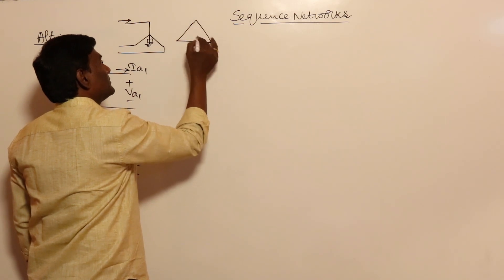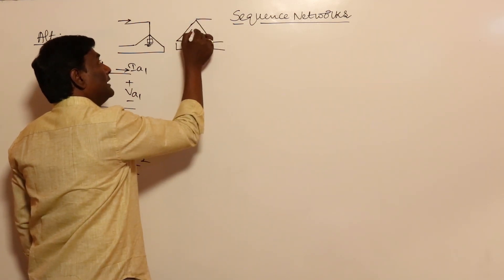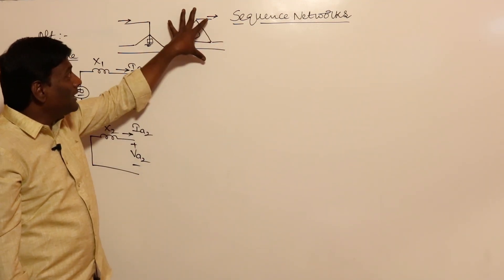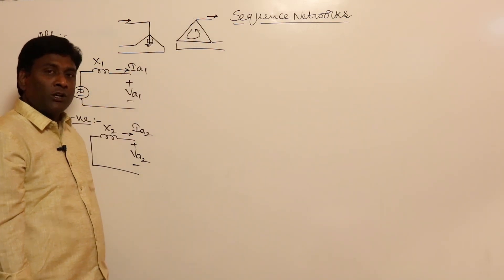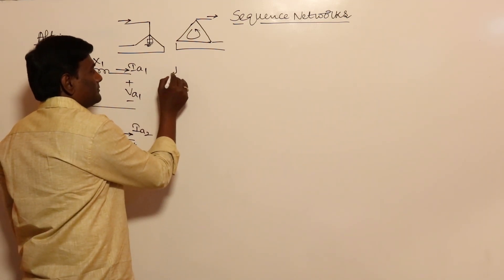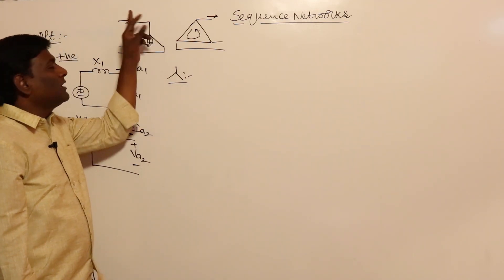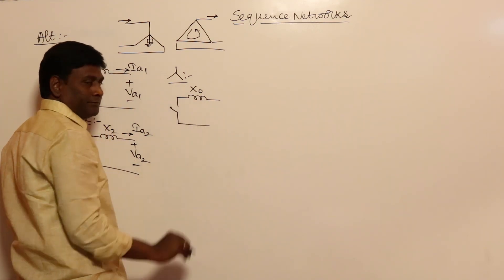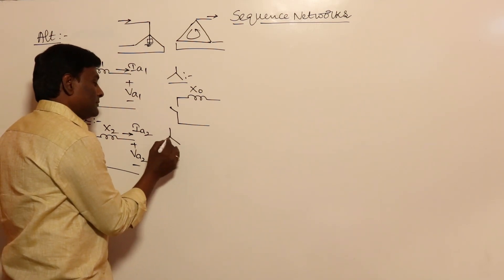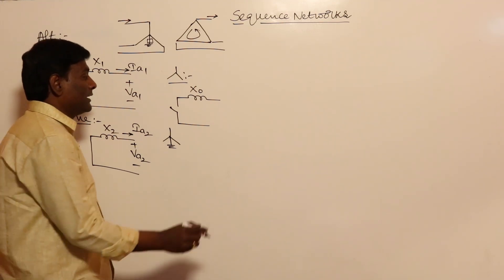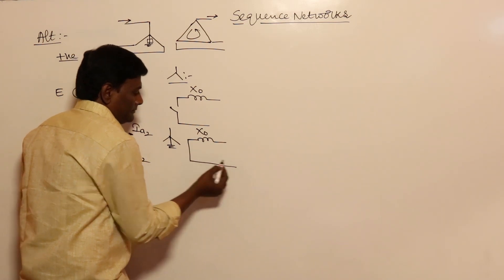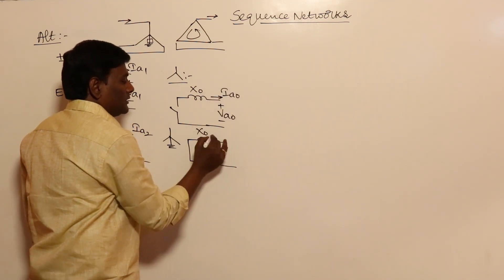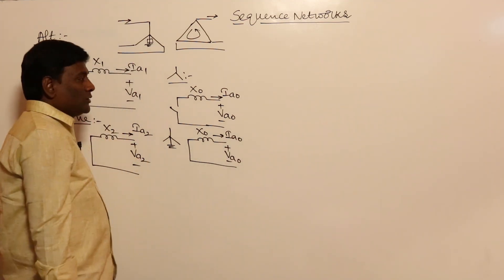When drawing the network for Ia0 only, that grounding impedance is converted to three times its value. For a delta connection, zero sequence currents can flow inside the delta phases, but cannot appear in the lines because Ia + Ib + Ic must equal zero at the delta node. For a star-connected machine without grounding, the zero sequence network has X0 with an open switch, since zero sequence currents cannot flow. For a solidly grounded star, the switch is closed and zero sequence currents can flow.